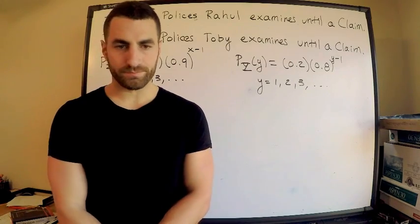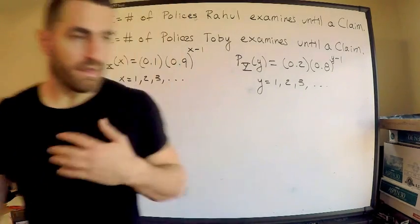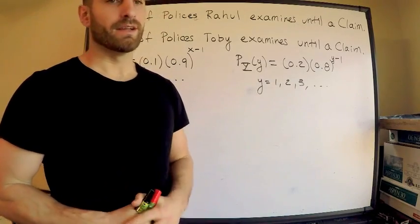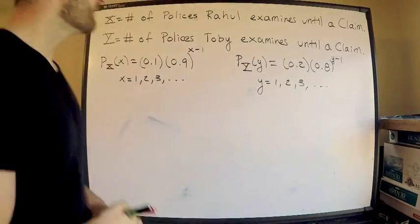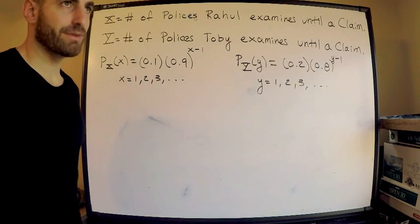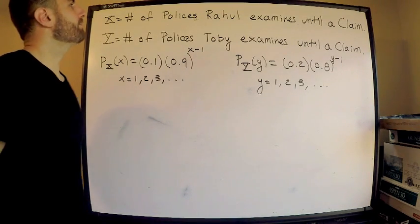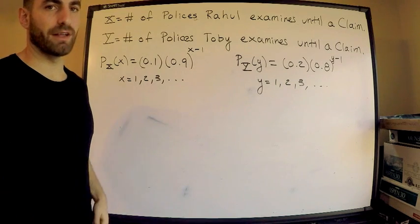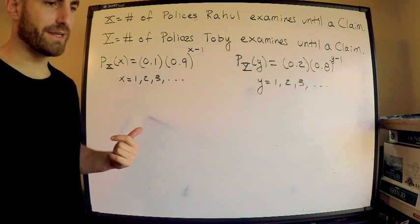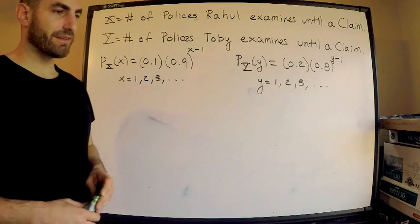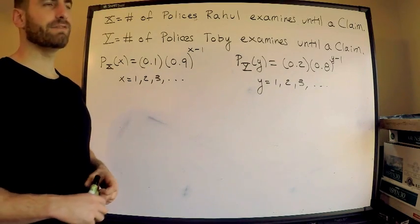Here are the details given. I did have to assume that you know something. Let me just go through real quick. Let X be the random variable - the number of policies that the actuary Raul examines until he finds a claim. And Y is going to be a similar random variable - the number of policies examined by Toby until he finds a claim.